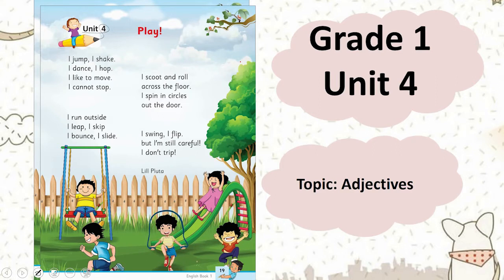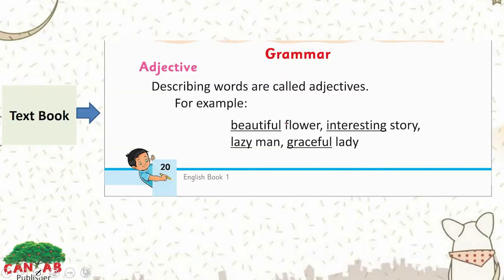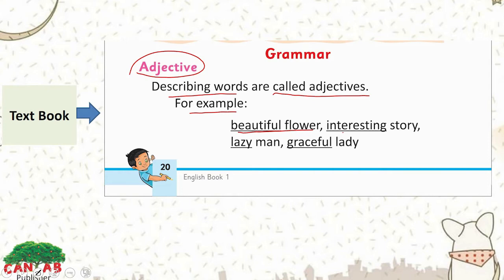The topic is adjectives. The SLOs of this lesson are: use some describing words showing quality, size, and color — for example, soft, big, yellow. In this lesson we are going to read about describing words or adjectives. Let's discuss what adjectives are. Describing words are called adjectives — for example, beautiful flower, interesting story, lazy man, graceful lady.